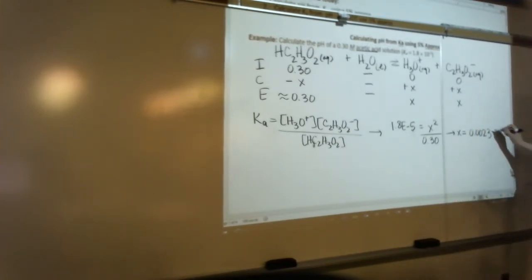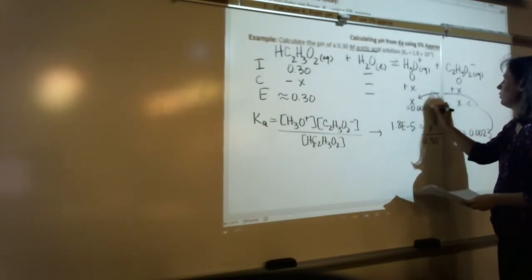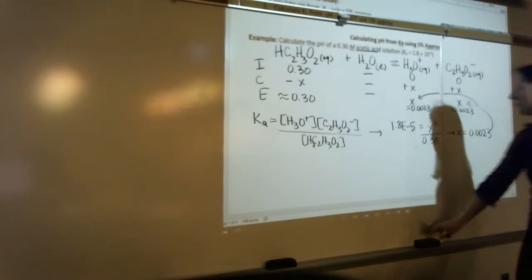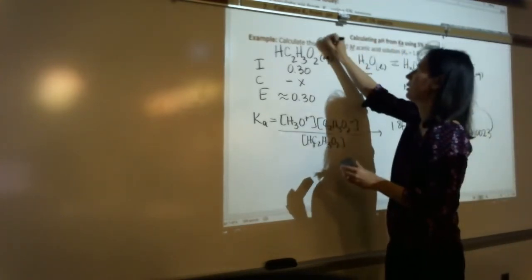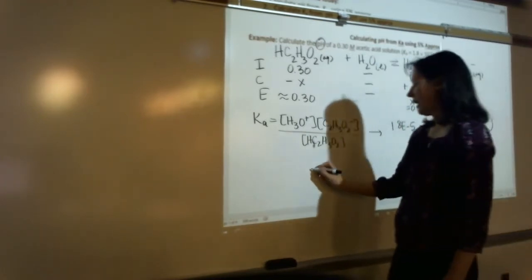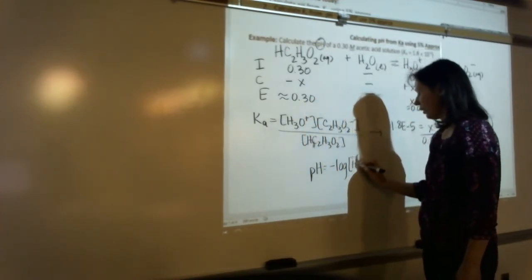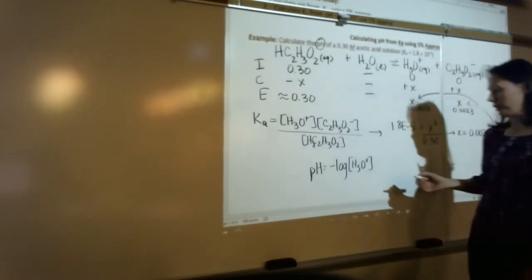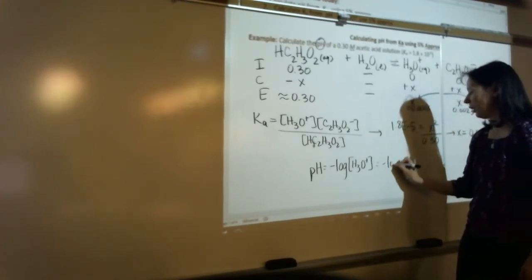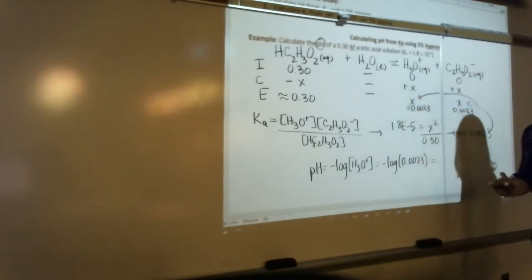Okay. Now x gets plugged back in here, gets plugged back in here, so that's 0.0023, 0.0023. Now how do I get pH? Do I have everything I need in order to get pH? What's the definition of pH? pH is negative log of concentration of H3O+. Do I have the concentration of H3O+ now? Yes. That's the value of x. So that's just negative log of 0.0023. So I got 2.63.